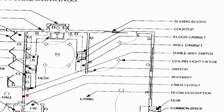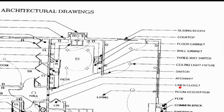Archway — looks like a wall except it's dashed lines, so that would be an archway, kind of like a doorway except there's no door in it; it's just an arch. Linen closet — labeled as LIN, for putting linens and the like in.